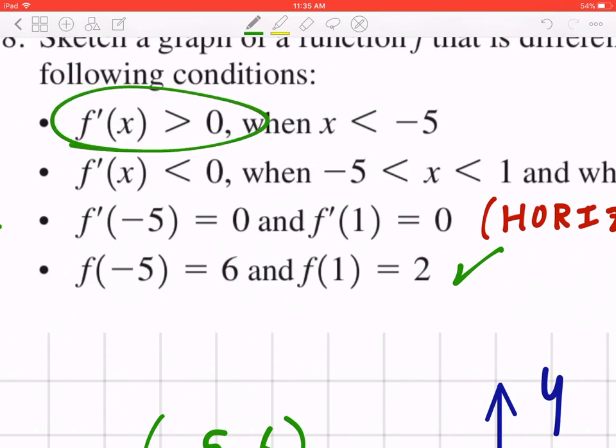The first point says the graph is increasing when x is less than negative 5.